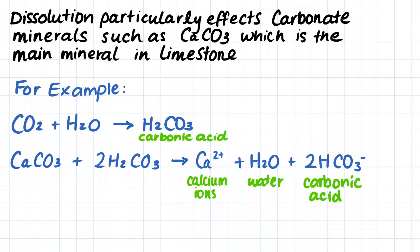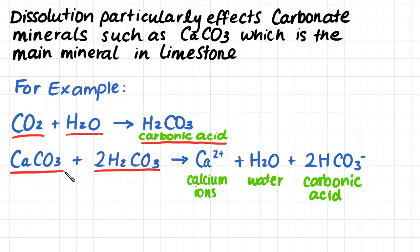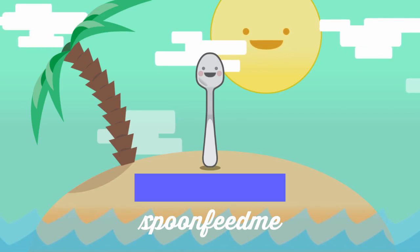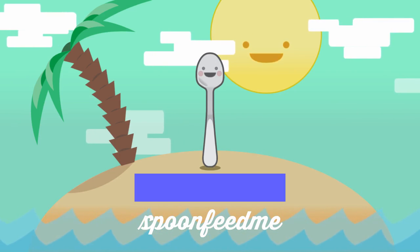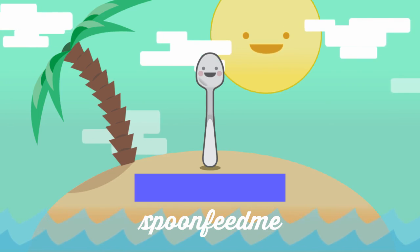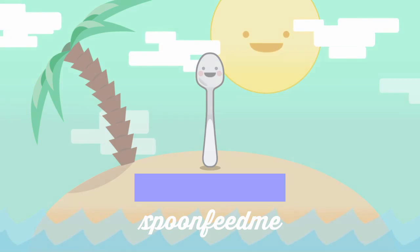Dissolution particularly affects carbonate minerals such as calcium carbonate, which is the main mineral in limestone. One example of a dissolution reaction is this one here. Firstly we have carbon dioxide dissolved in water, which produces carbonic acid. This carbonic acid then reacts with calcium carbonate and produces calcium ions dissolved in water.